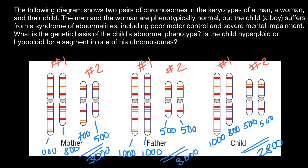This explains why the mother and father have normal phenotypes and the child has an abnormal phenotype. Now let's answer the last question: is the child hyperploid or hypoploid for a segment in one of his chromosomes? Because the child is missing a segment, we say he is hypoploid. Could this child be hyperploid, meaning he would have extra genes? Yes, he could. This chromosome he could inherit from the father's side, and also a normal chromosome number one from the mother's side, so he would be balanced. But if he inherited any of the normal chromosomes from the father's side and inherited this chromosome with extra 200 genes on it, he would be hyperploid — having 200 extra genes.